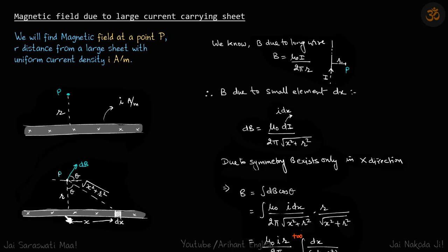If the field due to this element is in this direction, then the field due to a symmetric element on the left side will be along this direction. Both of these elements' y components will cancel. Eventually, B exists only in the x direction.